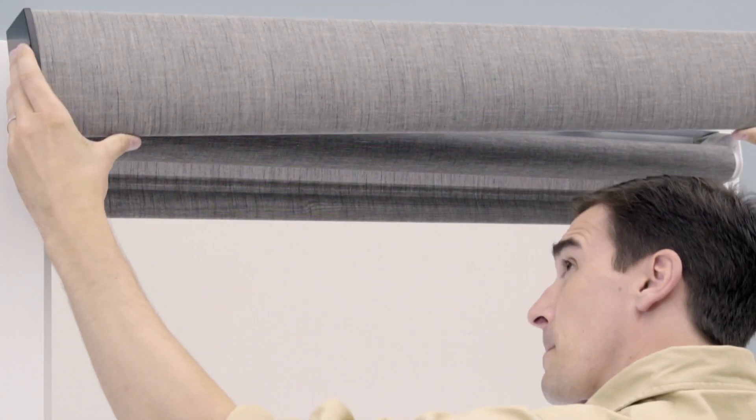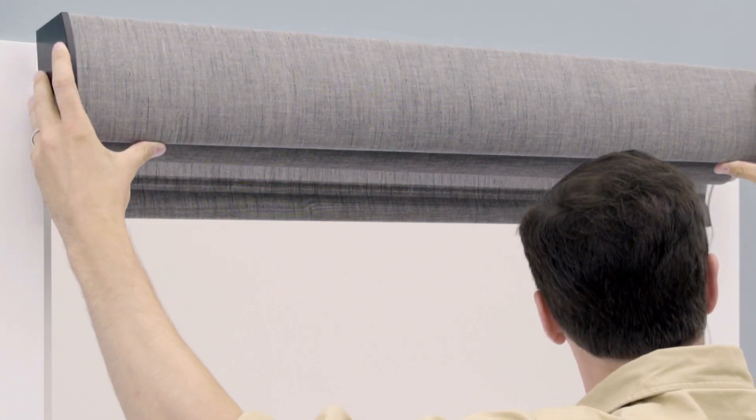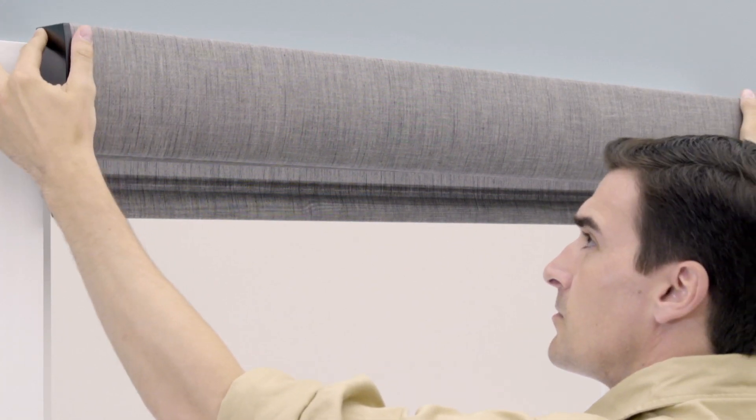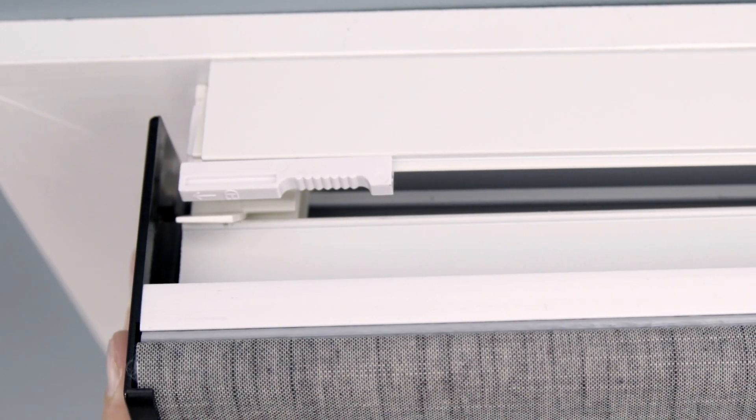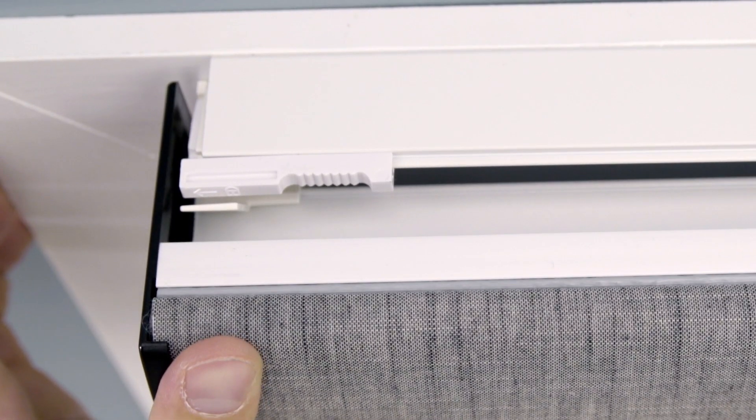You can now attach the fascia to the mounted shade. Insert the tongue on the inside of the fascia into the upper slots of the support brackets. Press firmly until the fascia clicks into the support bracket.